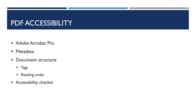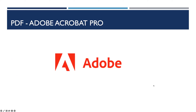Moving on to PDF document accessibility — covering Adobe Acrobat Pro, metadata, document structure, and Adobe Acrobat's accessibility checker. To remediate or make a PDF document accessible, you will need Adobe Acrobat Pro. Most people have the free Adobe Reader, but Reader does not have the built-in accessibility tools that Acrobat Pro has. If you don't have access, contact your IT department.